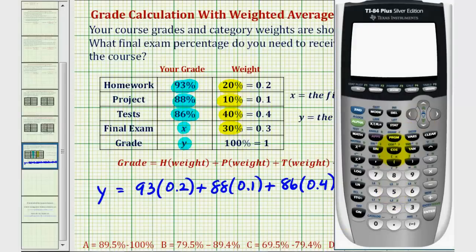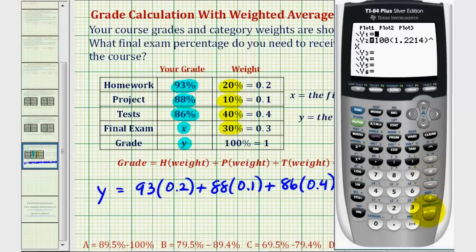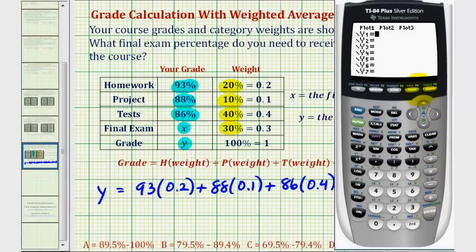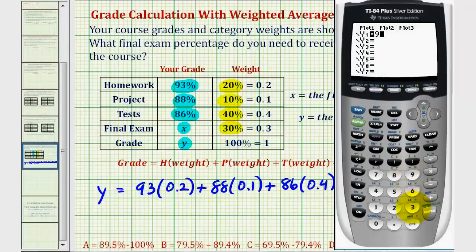So we're going to press Y equals, clear out any old equations, so clear, enter, clear, back up to Y1. We'll enter the right side of this equation just as it looks. So 93 times 0.2 plus 88 times 0.1 plus 86 times 0.4 plus X times 0.3.